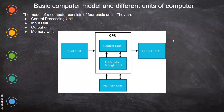In broad terms, a computer consists of an input unit, output unit, memory unit, and control and arithmetic logic unit. The input data flows in one direction into the CPU, and output flows in one direction out. The control unit has two-way arrows, meaning signals move in both directions. The memory unit is also two-way — data goes from memory to the CPU, and results can be stored back in memory.